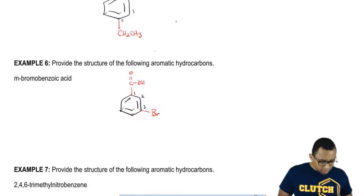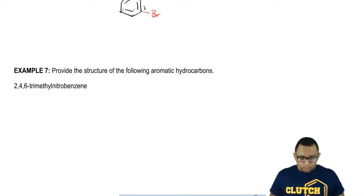Now that we've done those, let's see if you guys can draw this final structure here, 2,4,6-trimethylnitrobenzene. I'll give you guys a huge help here. Nitro is just NO2, so it's just an NO2 group. Do your best to draw the structure.